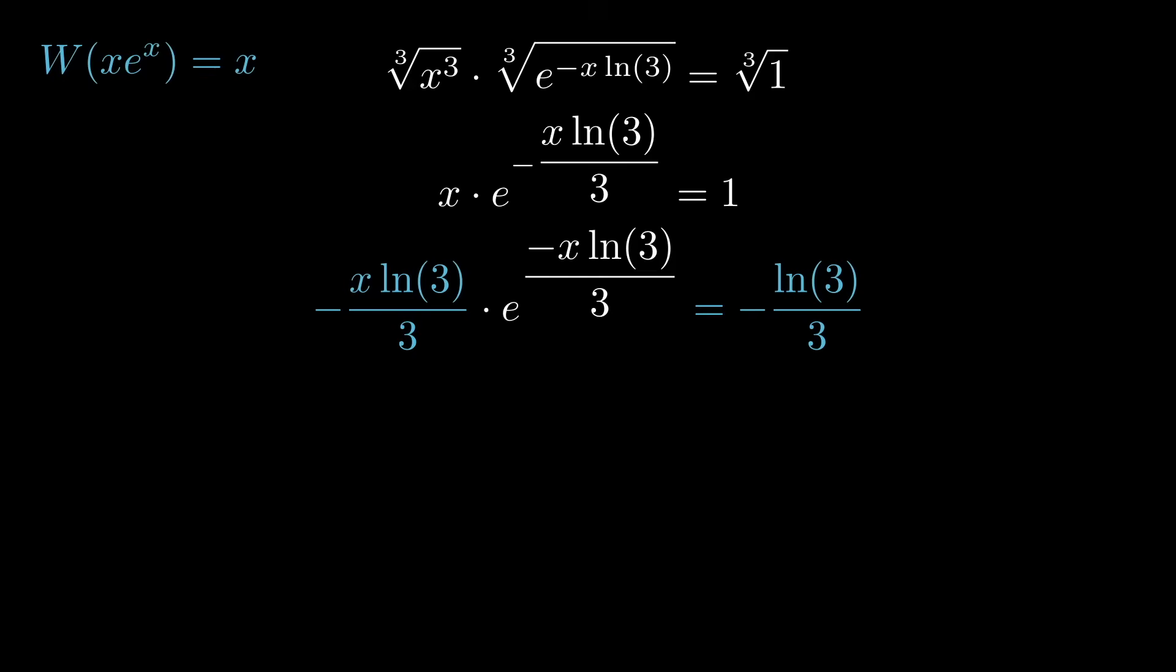Now this has the exact form that we're looking for. It's just not x, it's x times minus ln 3 over 3. But we can apply the w function to both sides all the same, using the property, the fact, that w and x e to the x are inverse functions.